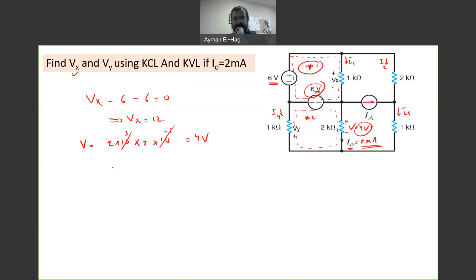So what do we have here? We have 6 plus 4 plus VY equal to 0. So this means that 10 plus VY equal to 0, or VY is equal to minus 10 volt.